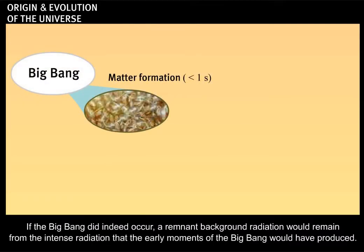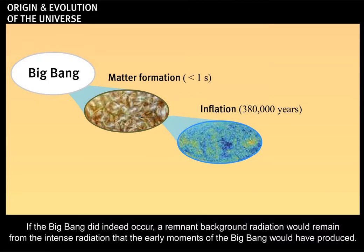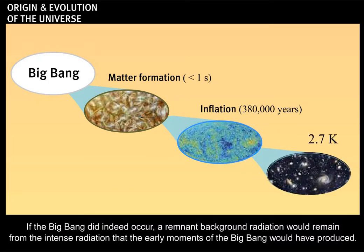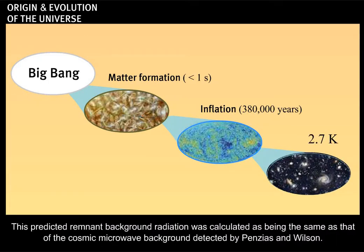If the Big Bang did indeed occur, a remnant background radiation would remain from the intense radiation that the early moments of the Big Bang would have produced. This predicted remnant background radiation was calculated as being the same as that of the cosmic microwave background detected by Penzias and Wilson.